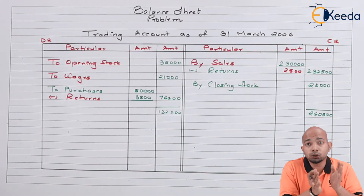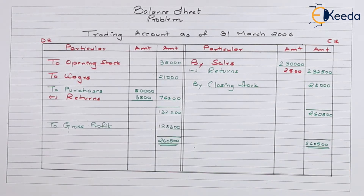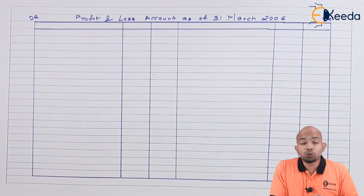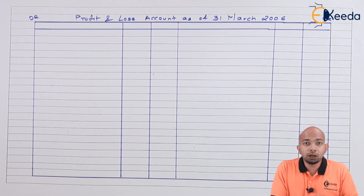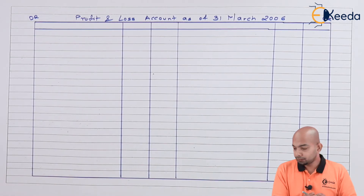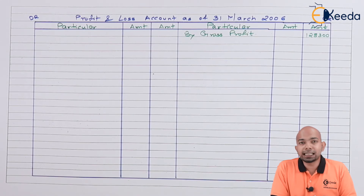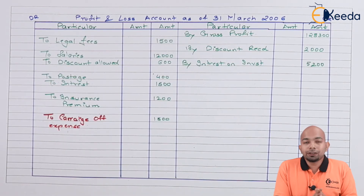The gross profit becomes the starting point of the profit and loss account. Now that we've figured out the gross profit, let's prepare the profit and loss account and see whether we have net profit or net loss. We'll start with the gross profit, then mention all the debit items and credit items of the profit and loss account from the trial balance.